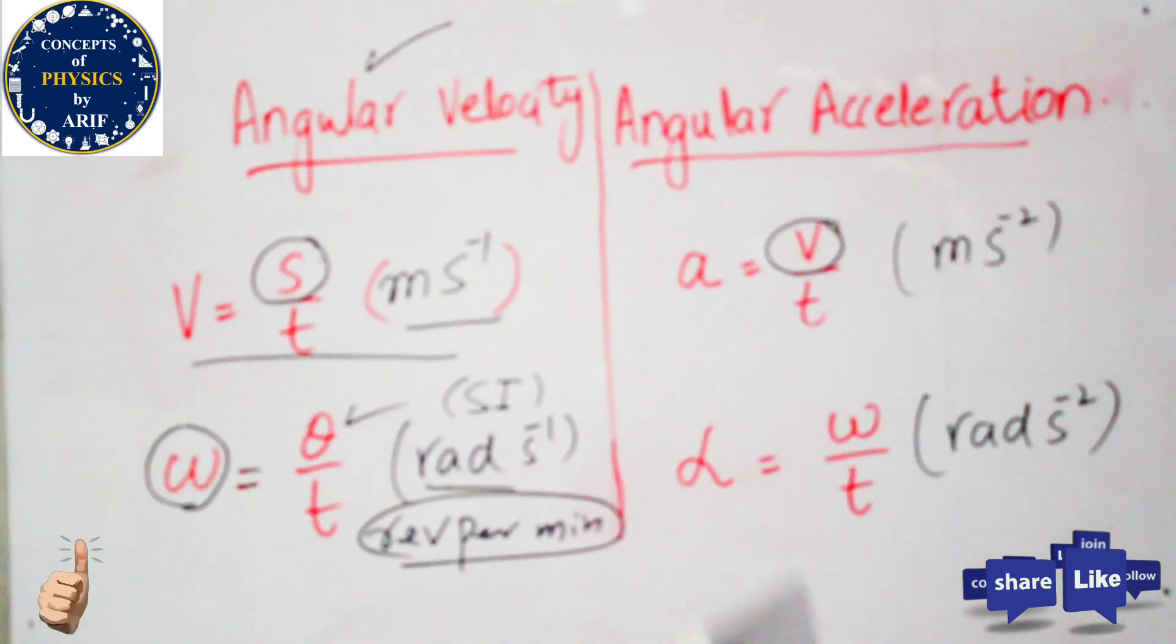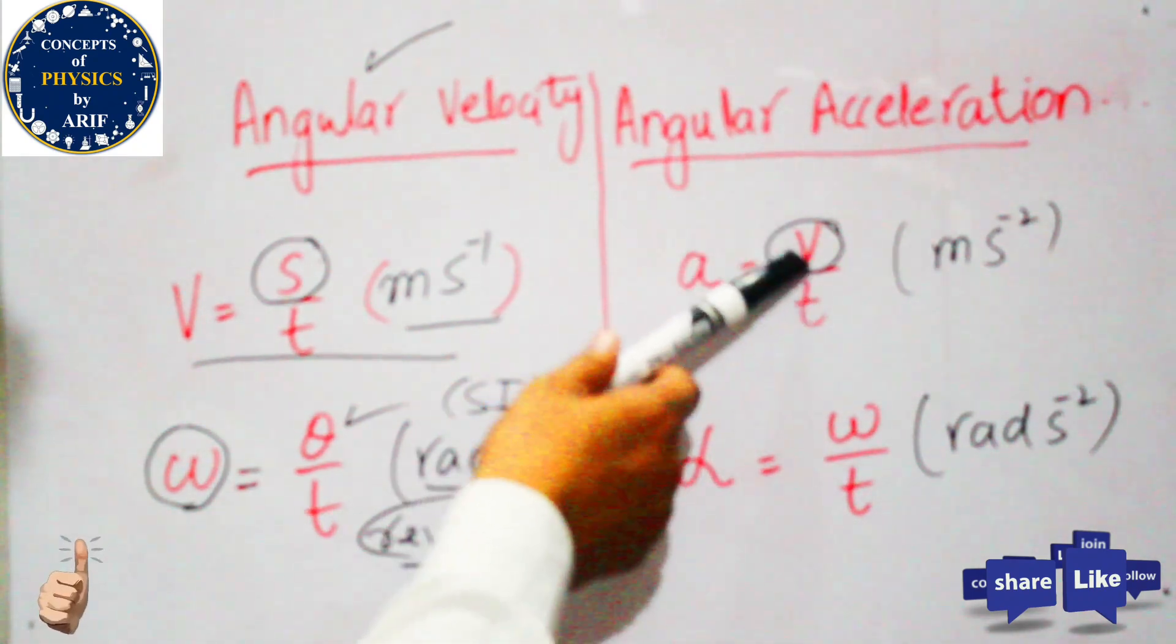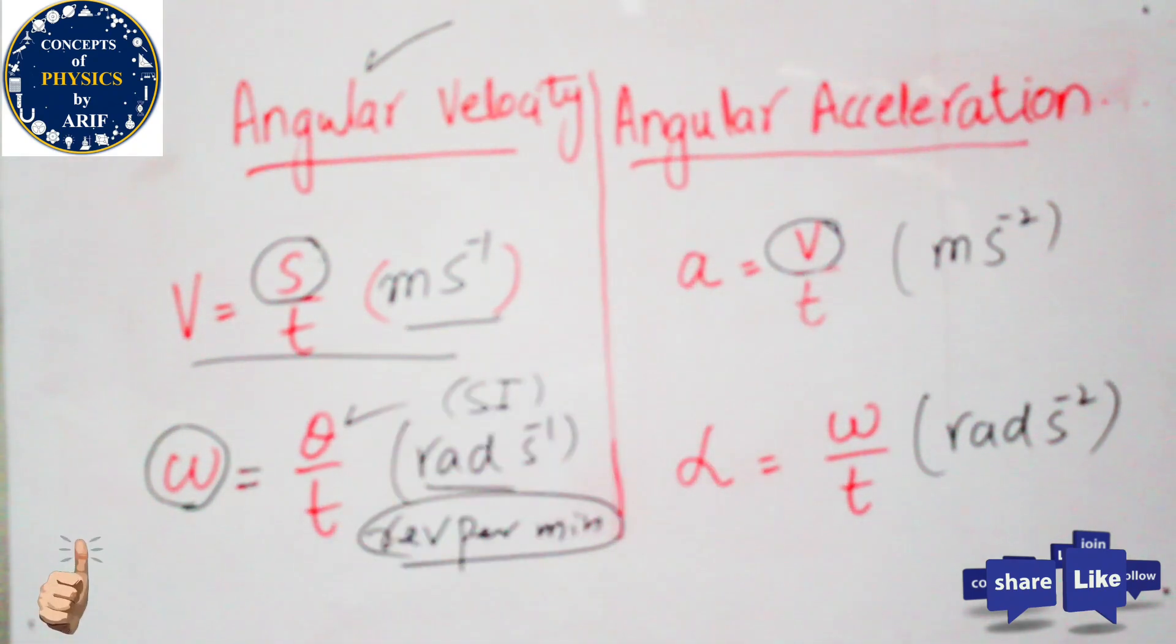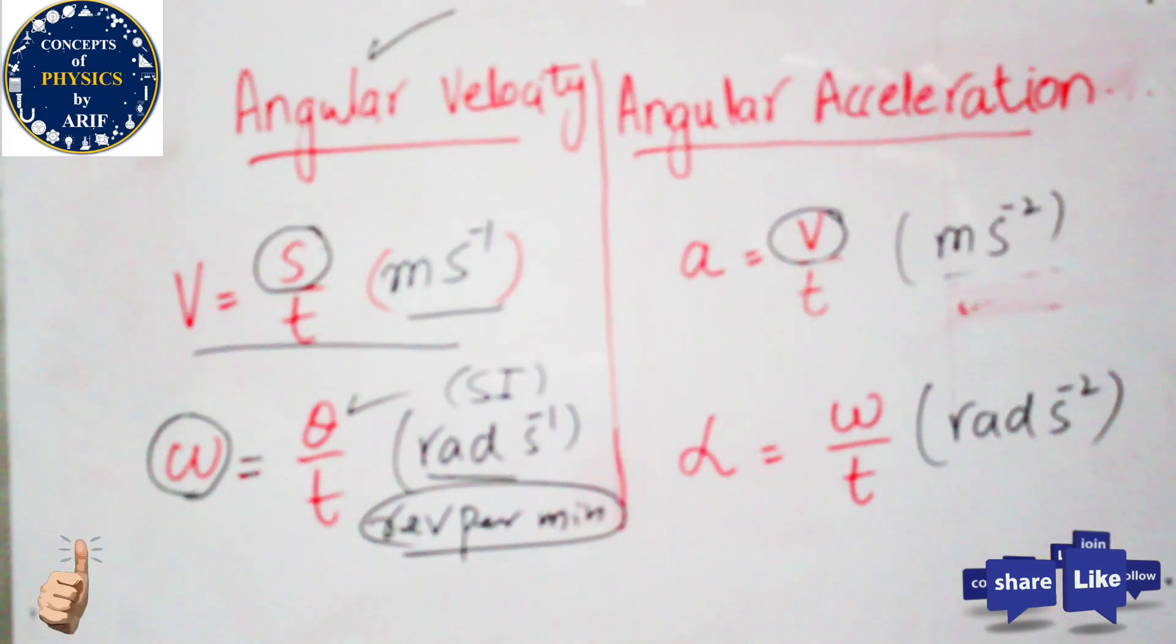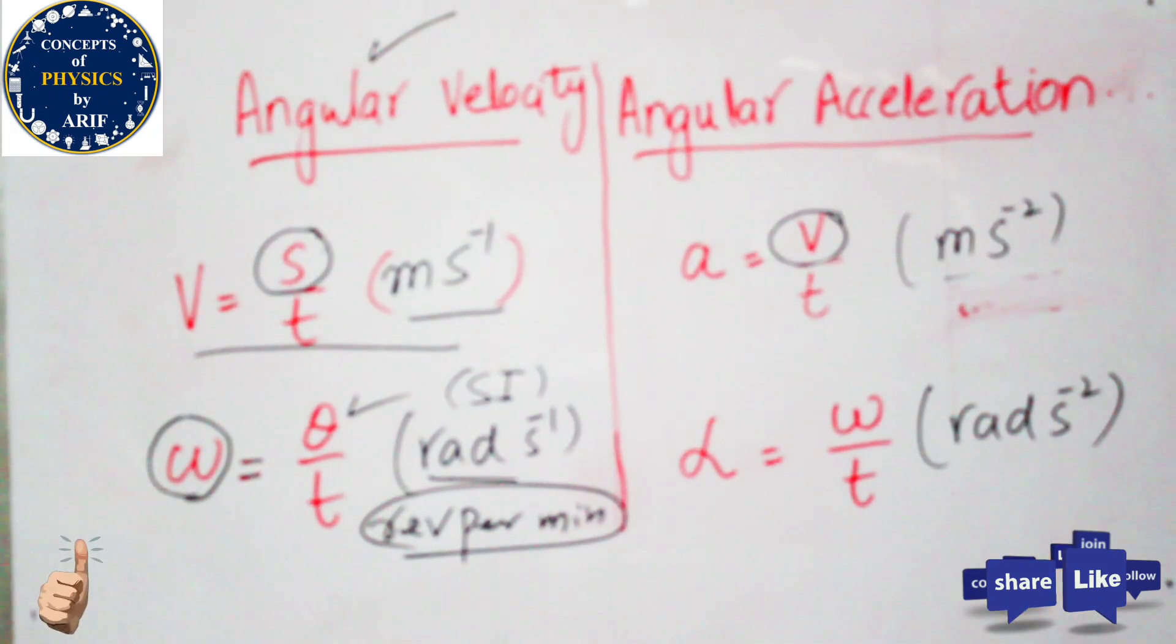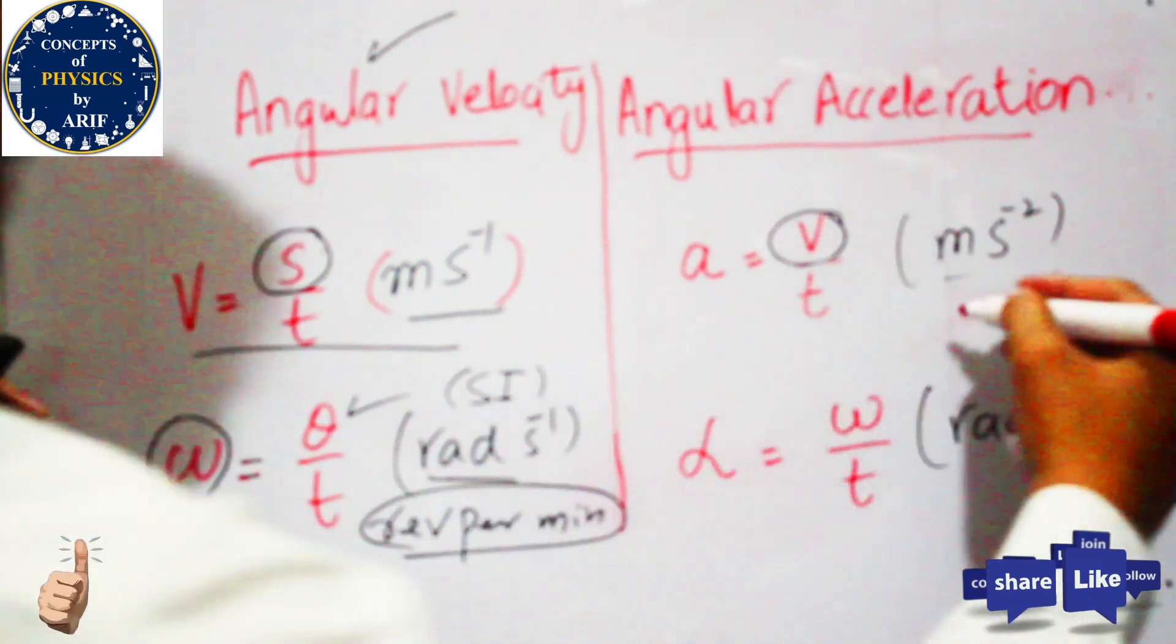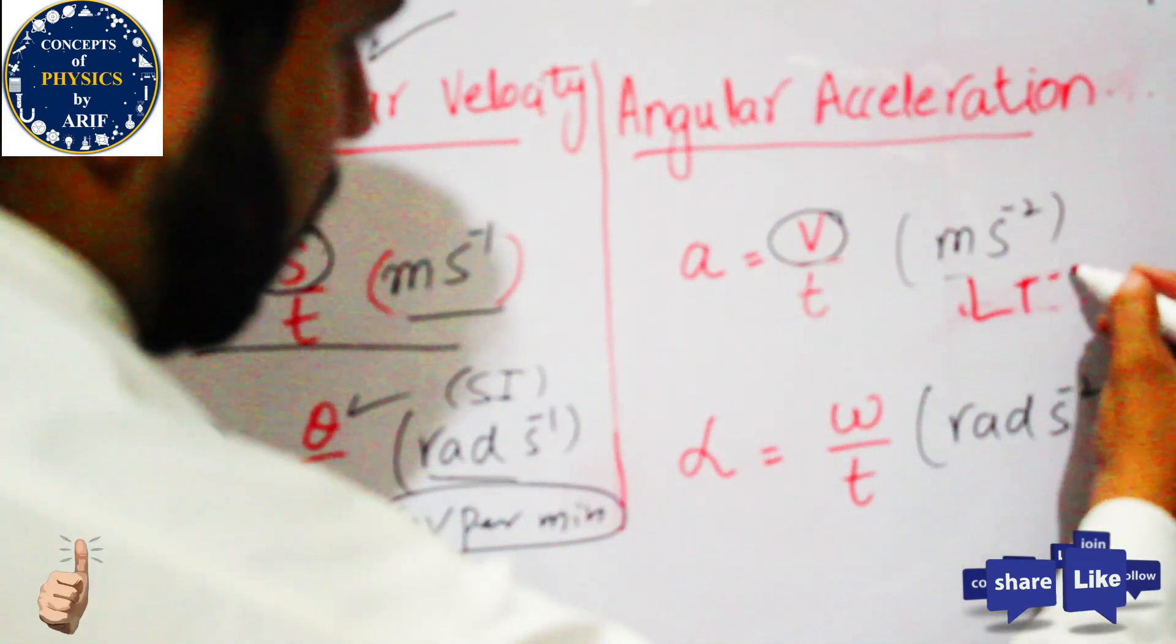Please remember that this velocity is linear velocity. The time rate of change of linear velocity is known as linear acceleration, and its unit is meter per second squared. The dimension of linear acceleration is L t^-2.